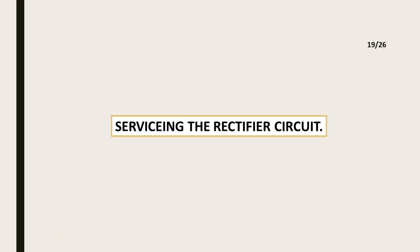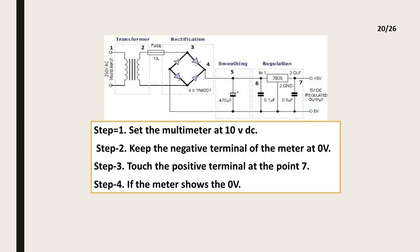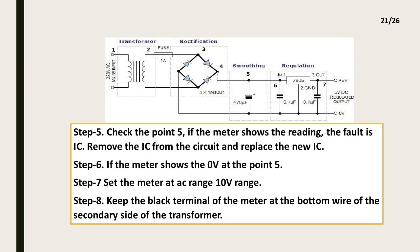Servicing the Rectifier Circuit. Step 1: Set the multimeter at 10 volt DC. Step 2: Keep the negative terminal of the meter at 0 volt. Step 3: Touch the positive terminal at point 7. Step 4: If the meter shows 0 volt, Step 5: Check point 5. If the meter shows a reading, the fault is the IC — remove and replace the IC. Step 6: If the meter shows 0 volt at point 5, Step 7: Set the meter to AC range, 10 volt range. Step 8: Keep the black terminal of the meter at the bottom wire of the secondary side of the transformer. Step 9: Check point 3 — if the meter shows a reading, replace the 47 µF capacitor.